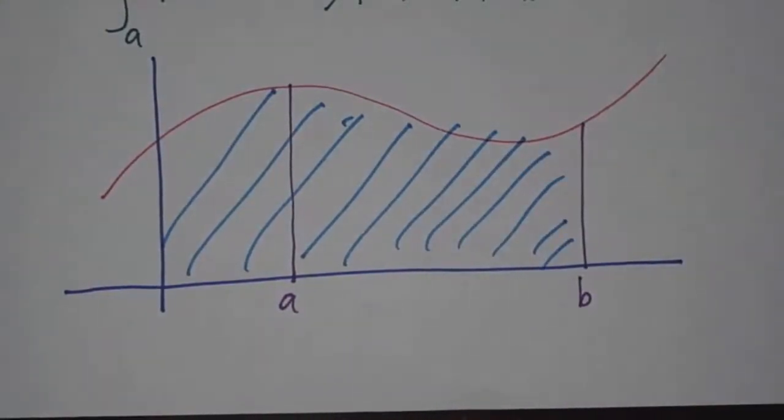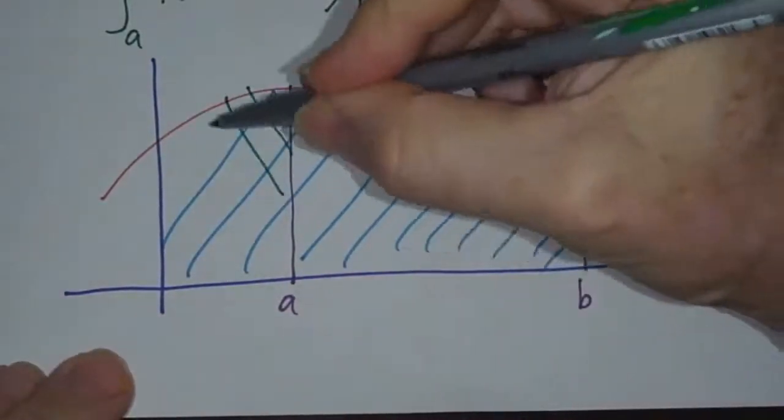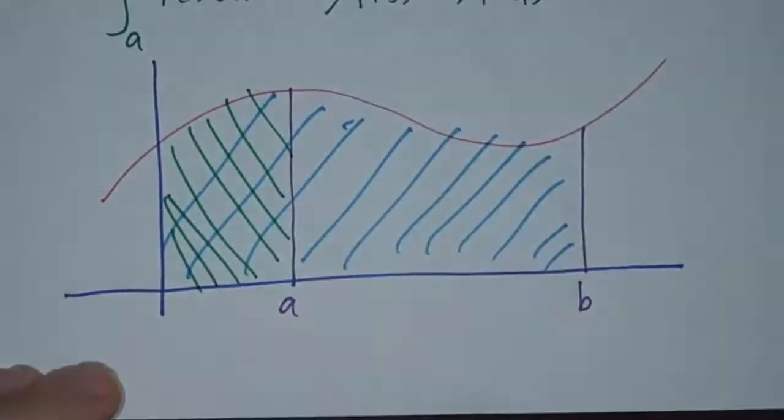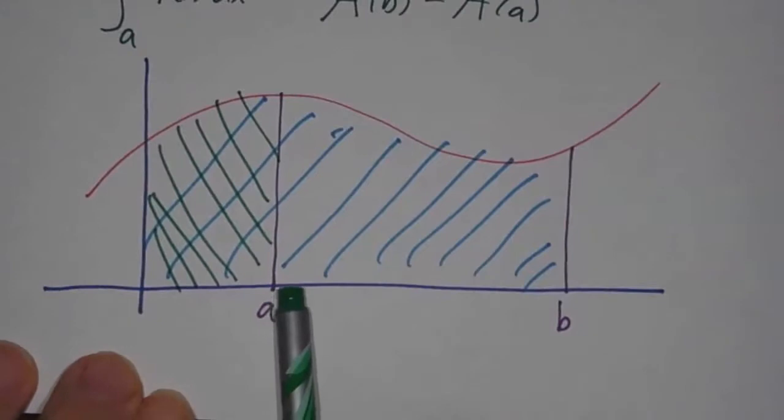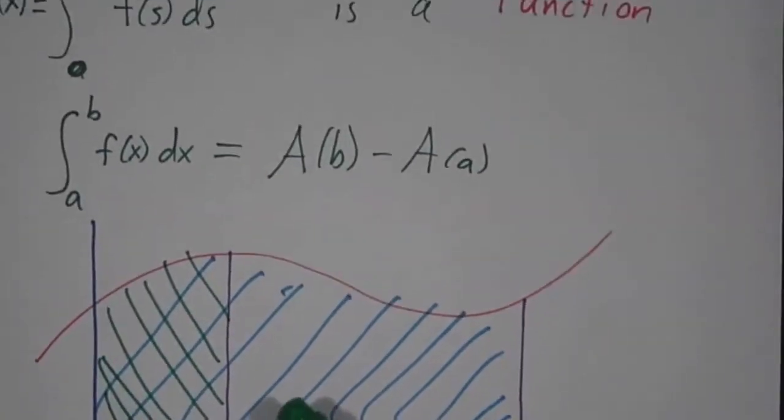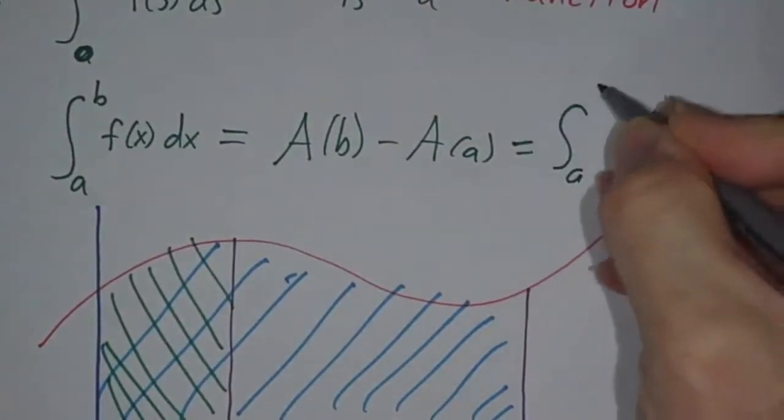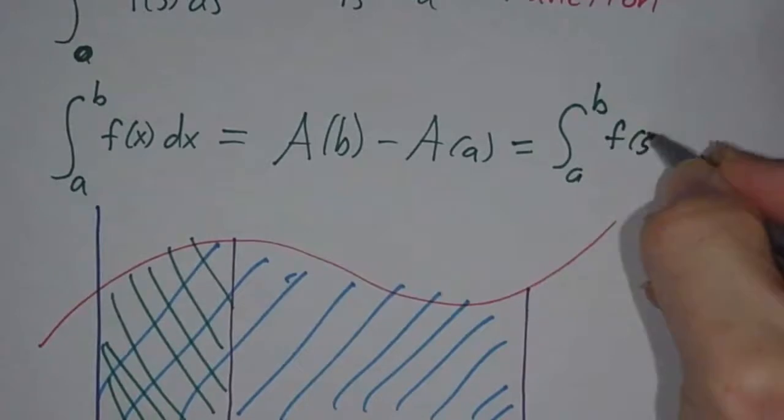The accumulation function evaluated at a is all of the area up to a. You take the difference, and you've got all of the area from a to b. And that is the integral from a to b of f(s)ds.